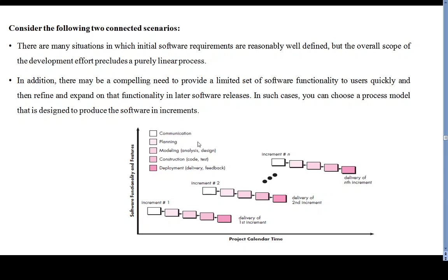The incremental model has the following phases: communication, planning, modeling, construction, and deployment. The first increment is called the crude product, where the basic requirements are implemented. In subsequent increments, new requirements are added in the upcoming releases.